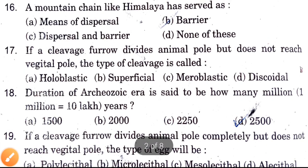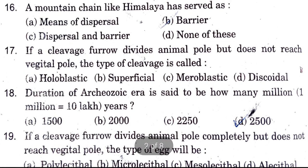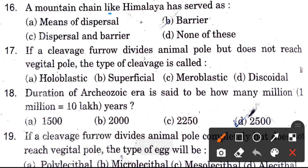A mountain chain like the Himalayas has served as — options are means of dispersal, barrier, dispersal and barrier, or none of these. A mountain chain like the Himalayas acts as a barrier.